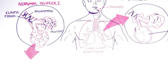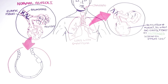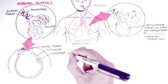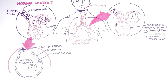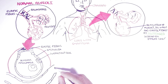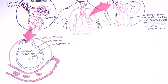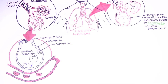Zooming into a single alveolus, we can find elastic fibers, epithelial cells, and surfactant cells. Within the alveolus, we can find alveolar macrophages that have a role in cleaning up the alveolus and protecting it against infections. Here we also have the blood supply containing red blood cells, where oxygen will be exchanged for carbon dioxide.